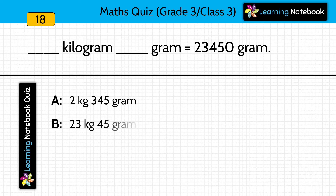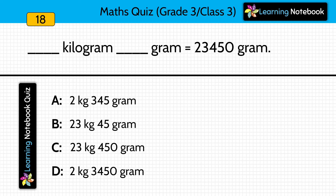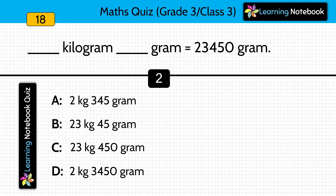Dash kilograms and dash grams equals to 23,450 grams. Look at the options carefully — you have to convert these grams into kilograms and grams. Answer is 23 kilograms 450 grams.